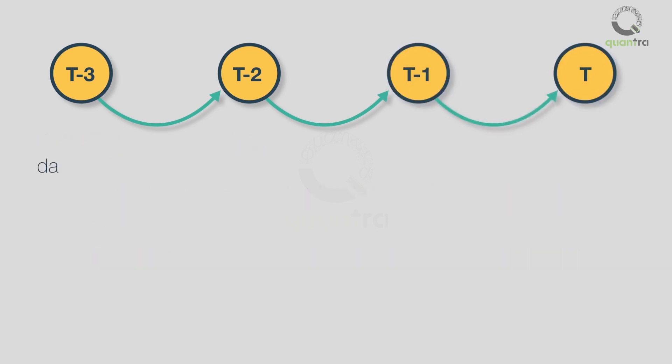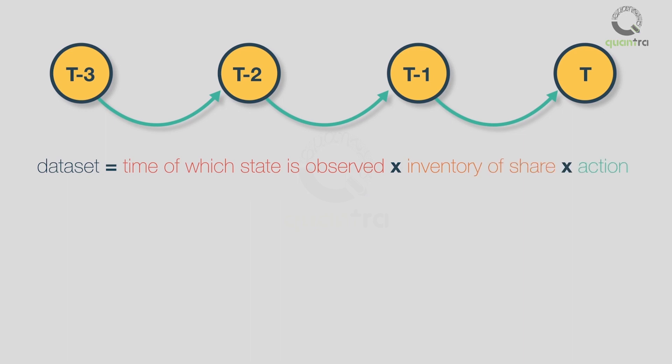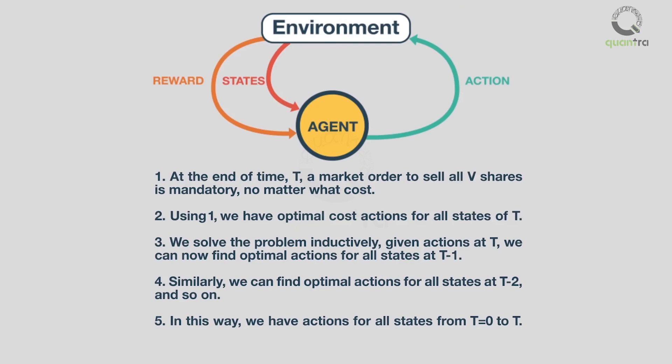The model learns by going through the dataset of a limited number of all possible states, which are defined as the product of T, I, and L — where T is the times at which states are observed, I is the number of inventory units, and L is all possible actions. To get a thorough understanding of this study, we would suggest you find and go through the paper online. We hope this video has given you some idea of how a reinforcement learning model is used to create an execution trading strategy. Good luck.